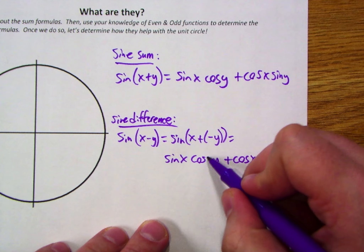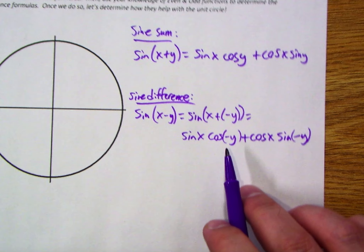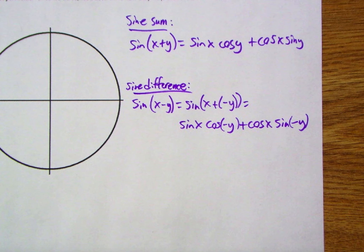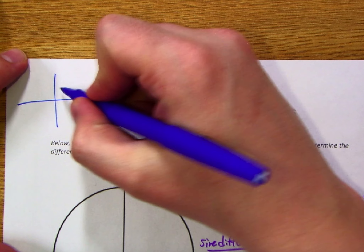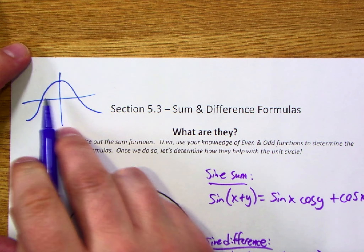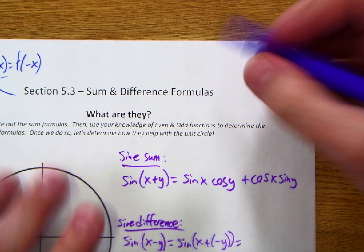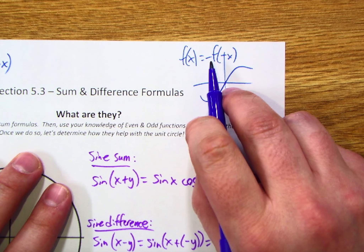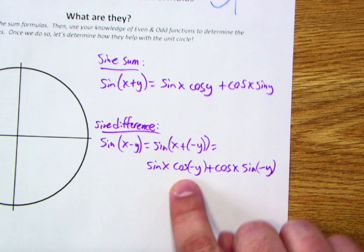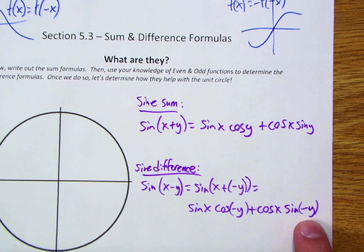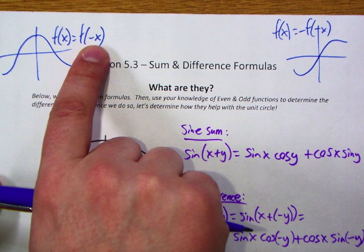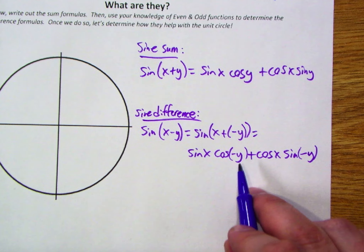Now let's apply the ideas about even and odd functions for cosine. Cosine is an even function because a horizontal reflection maps it back onto itself, and therefore f(x) equals f(−x). In the case of sine, using the general structure of a sine graph, we see that it's an odd function — a horizontal followed by a vertical reflection maps it back onto itself. Because cosine is even, cosine of negative y is the same as cosine of y, so I can simply rewrite that piece as cosine of y, giving sine of x times cosine of y.